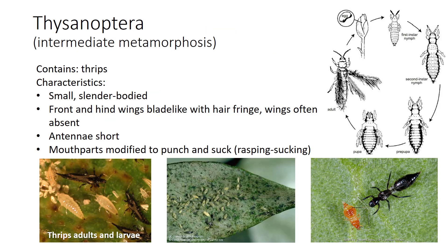Thrips are in the order Thysanoptera, which means fringe wing, due to the front and hind wings having a fringe of hair if they have wings. They are very small, slender insects with unique mouthparts. They inject their cone-like, rasping-sucking mouthparts into the plant and suck the juices of the buds, flowers, or fruits, causing damage to these structures. Some thrips are common pests of plants while others are predaceous and feed on mites and other thrips. Thrips have intermediate metamorphosis since they may have a pseudopupal stage with a silken cocoon.